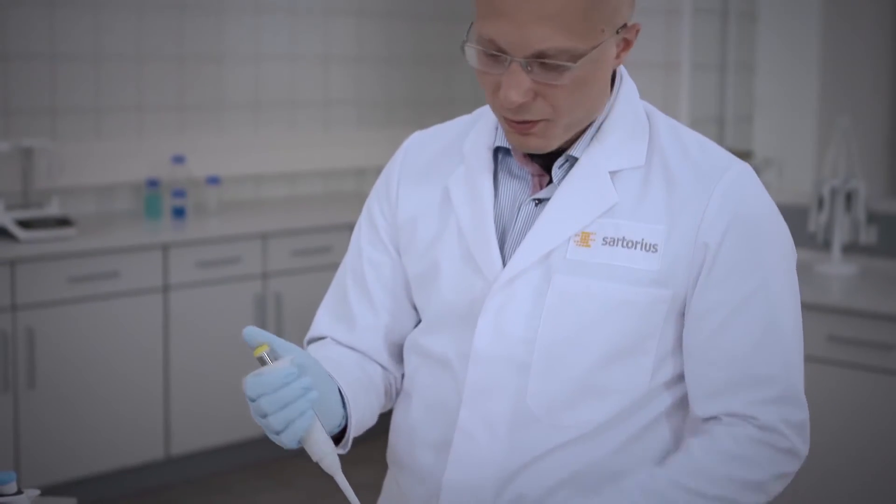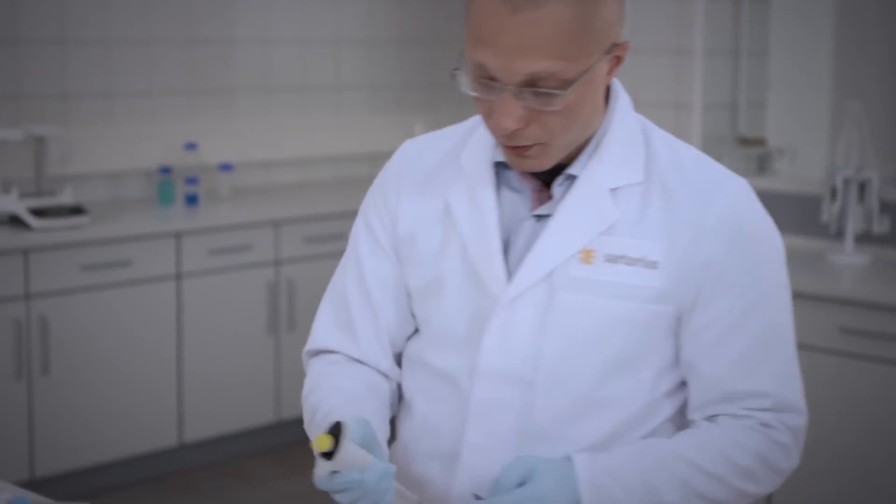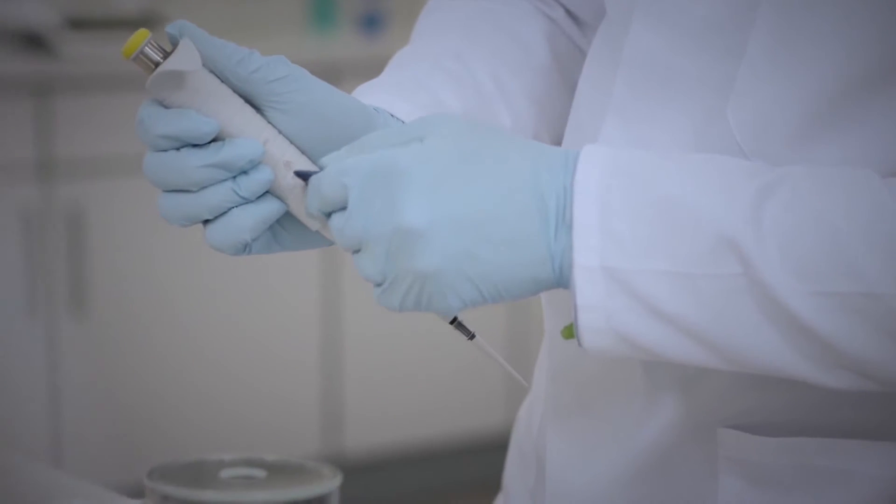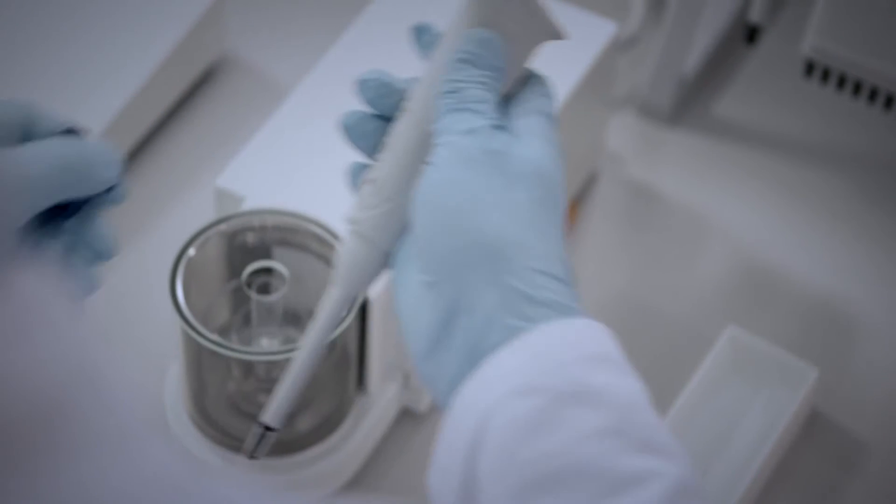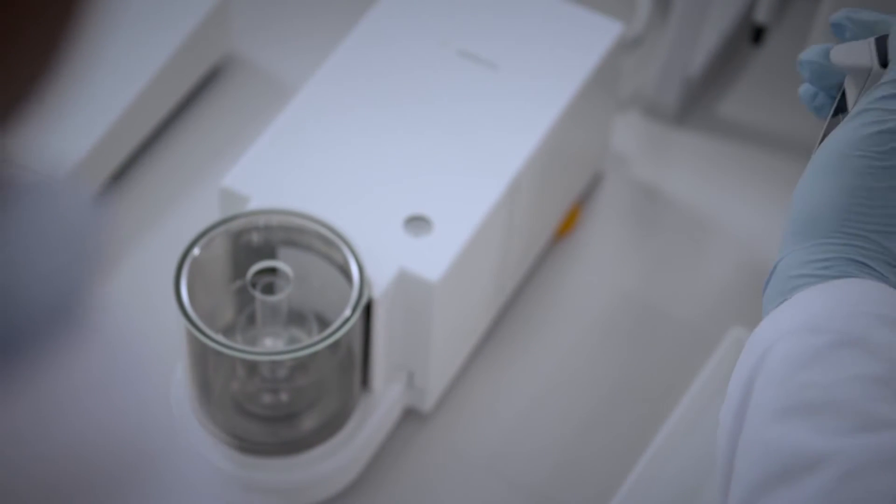Pipettes can often be adjusted to correct for accuracy using special calibration tools. A turn clockwise would increase the dispensed volume, while a turn counterclockwise decreases the volume.